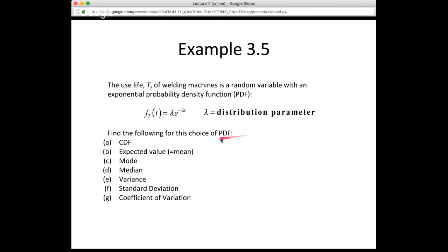I should say right off the bat that I had a typo in the lecture notes. I originally put this as 1 over lambda — it actually should be lambda. You can tell just by looking at the units. The argument of the exponential has to be unitless. Because T has units of time, lambda has units of inverse time. The PDF has units of inverse time as well, so lambda has to be multiplied, not divided.